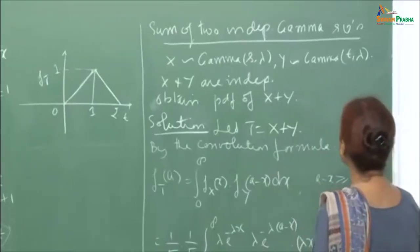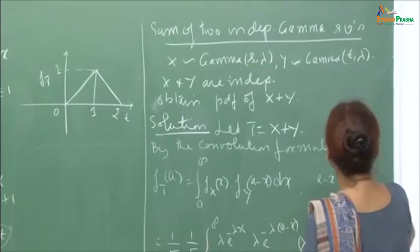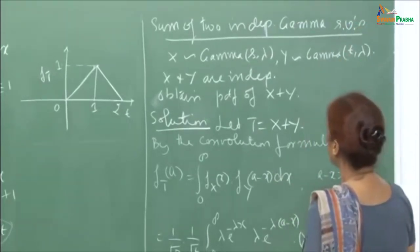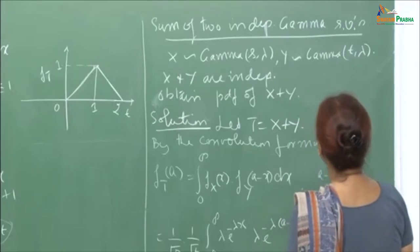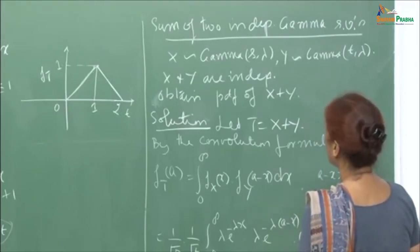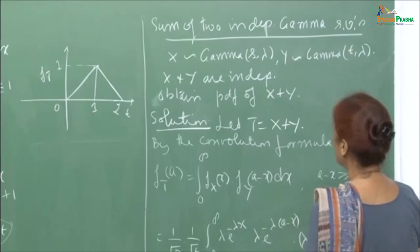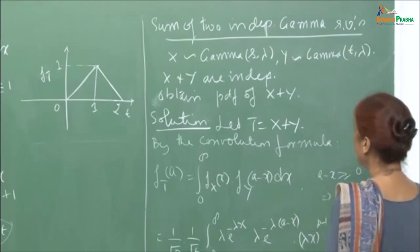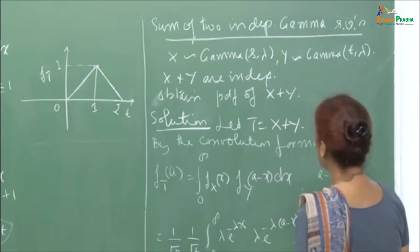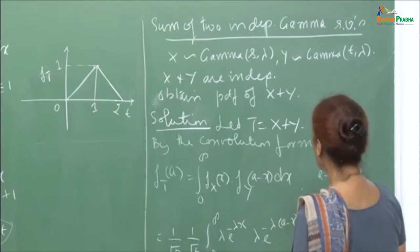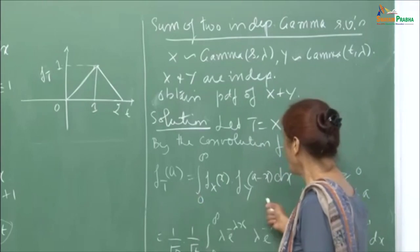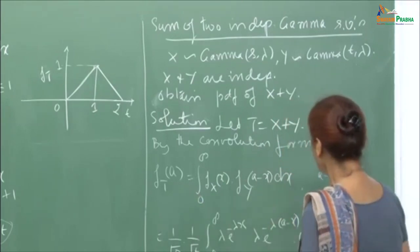Another example: the sum of two independent gamma random variables. Suppose X is Gamma(s, λ) and Y is Gamma(t, λ), and X and Y are independent. We want to obtain the PDF of X+Y. Define T = X+Y and apply the convolution formula f_T(a) = ∫ f_X(x) f_Y(a−x) dx.